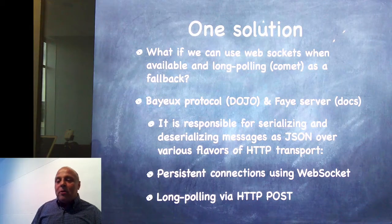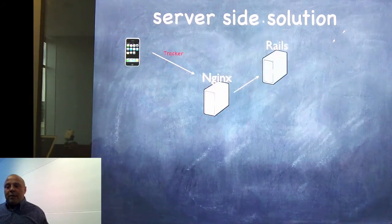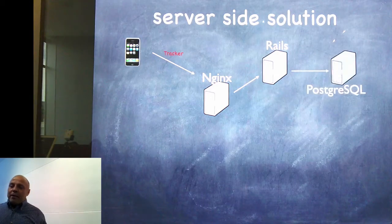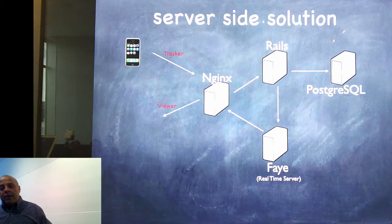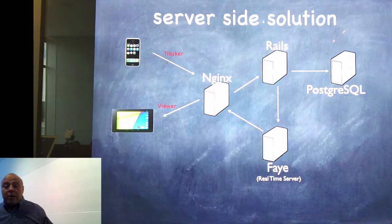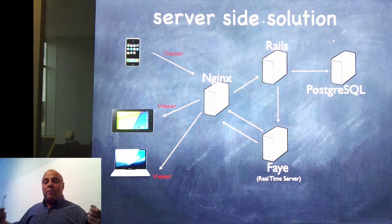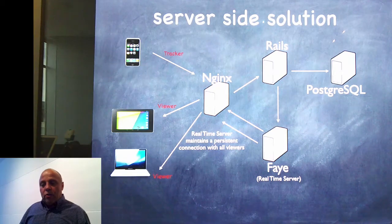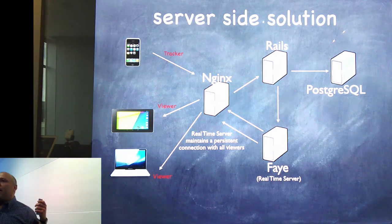So my final server solution is this: we have a location tracker on a mobile device going through Nginx at the front, passing information to Rails. Rails persists to a Postgres database and at the same time passes on the request to a Faye real-time server. Faye sends it back through Nginx and it gets pushed back to the viewer — to anybody who's viewing the location. The real-time server maintains a persistent connection with all viewers — say we have a thousand simultaneous connections, the Faye server is going to keep a thousand connections open, and likewise with the Nginx server.